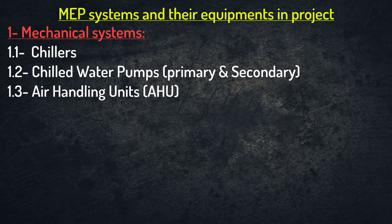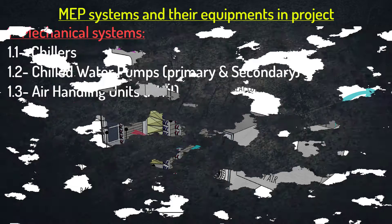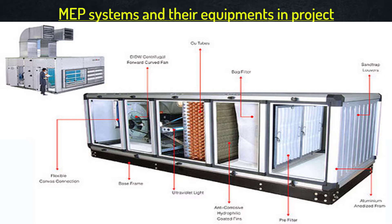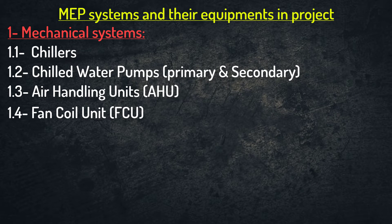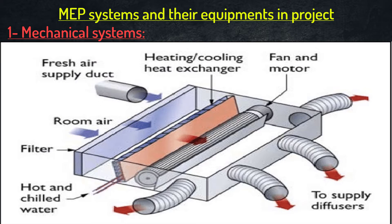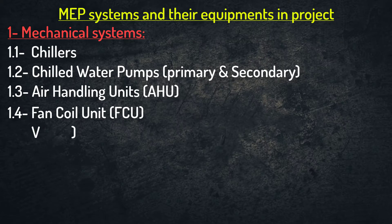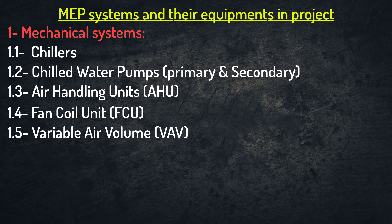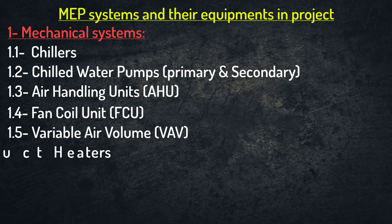Third, air handling units or AHU. Fourth, fan coil units or FCU. Fifth, variable air volume or VAV. Sixth, duct heaters.